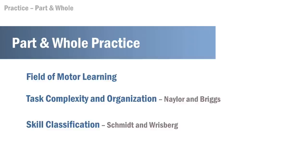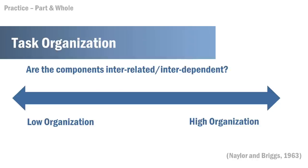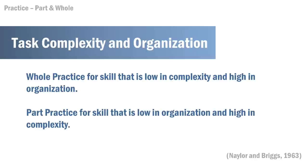Naylor and Briggs gave us their hypothesis of task complexity and organization, with Schmidt and Risberg looking at skill classification. How many components are involved in the task? Walking would be considered a continuous skill — low complexity. High complexity might be transitioning from lying to standing. In terms of organization, are the components interrelated or interdependent? Walking involves both upper and lower extremity reciprocal swing and multiple joint involvement, making it high organization. Naylor and Briggs recommend that whole practice is appropriate for a skill that is low in complexity and high in organization. Walking is indeed a skill where whole practice is relevant.